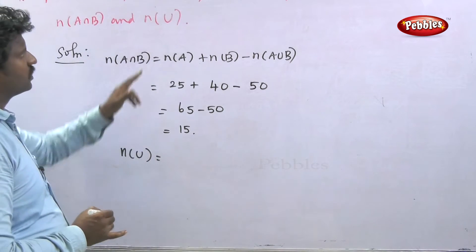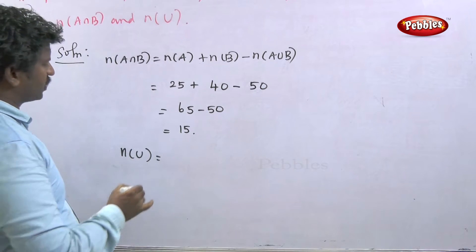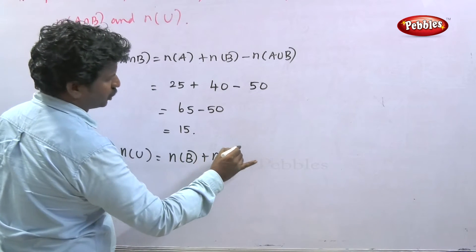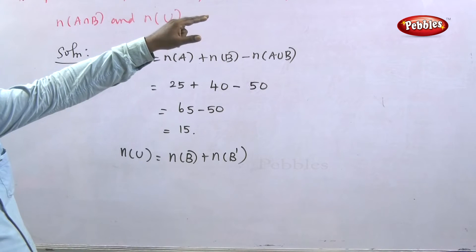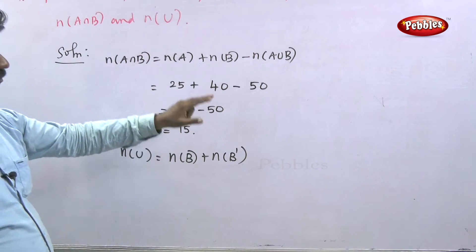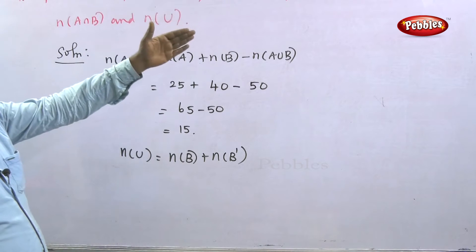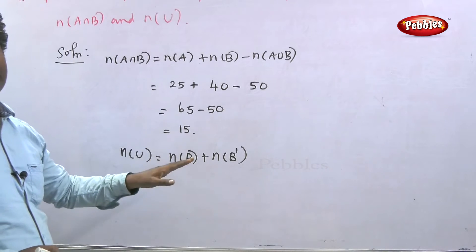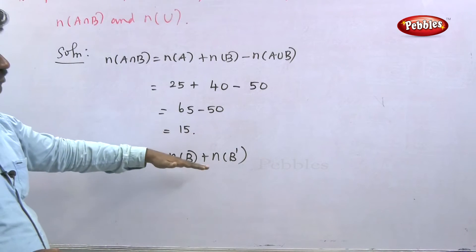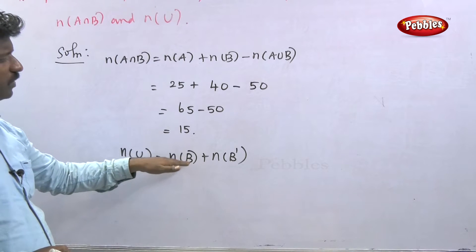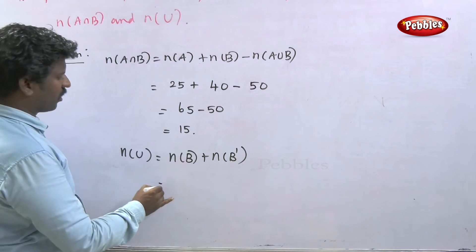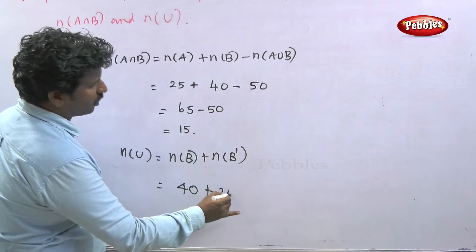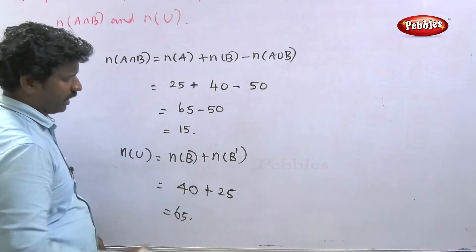For n of U, the universal set: the formula is n of U equals n of B plus n of B dash. The value of n of B is 40, and n of B dash is given as 25. So n of U equals 40 plus 25, which equals 65. Therefore n of U is 65.